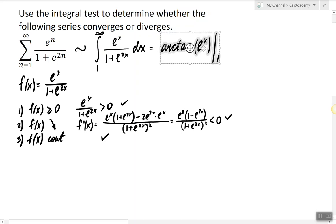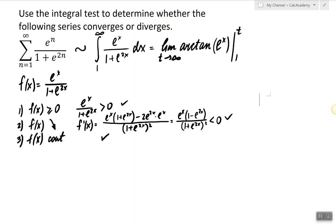But we cannot write infinity in the limit, so we're going to use the limit as t goes to infinity. And now this integral as t goes to infinity, e to infinity is infinity, arctangent of infinity is actually pi over 2.